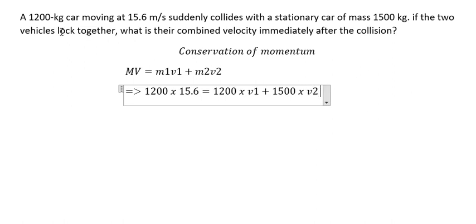Because two cars lock together, it means V1 equals V2. So we can put V right now. Now we can find the answer.